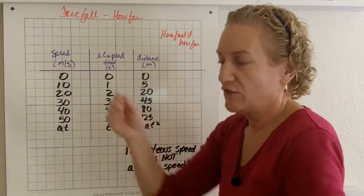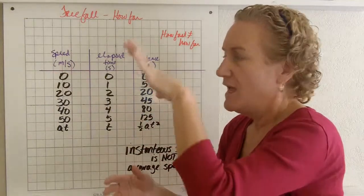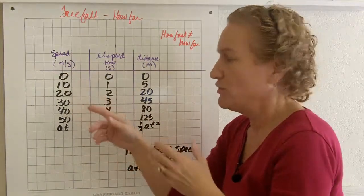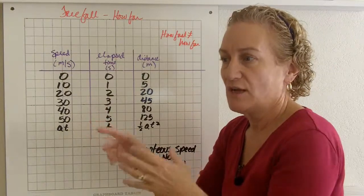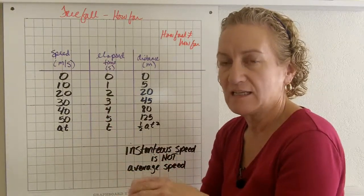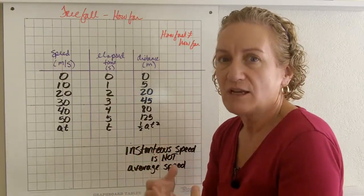So let's think about it. You take a Barbie doll and you drop her off of a very high building. And at the end of one second, you know she's going 10 meters per second. She's gone 10 meters per second for one second. And so naturally you might think she's gone 10 meters.